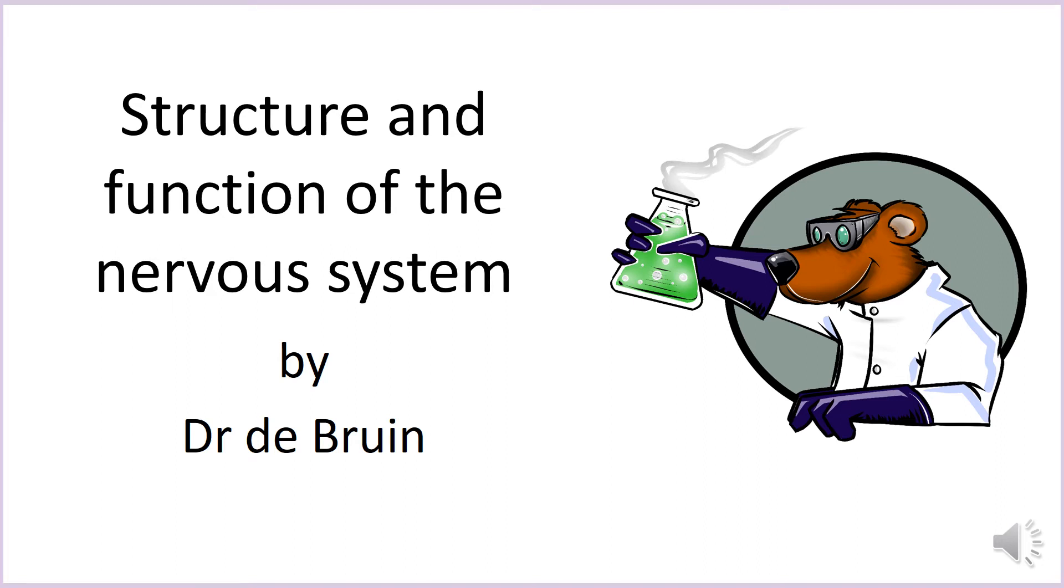This is a revision video about the GCSE biology topic of the nervous system. This comes up in the homeostasis and response chapter of AQA GCSE Biology and Combined Science, although some schools and textbooks call it coordination and control instead.